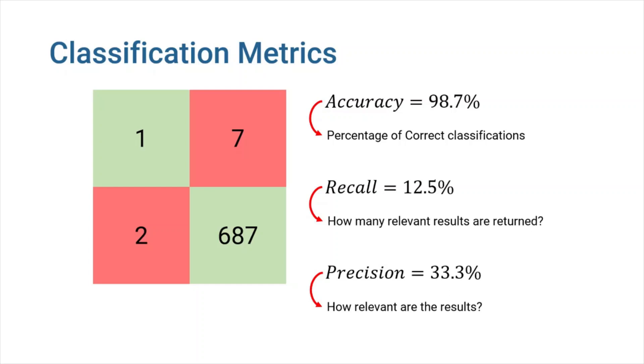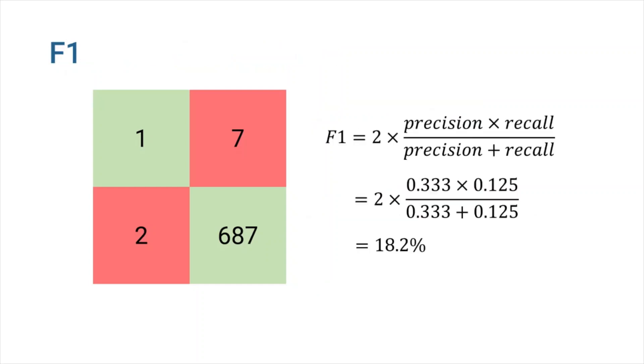There is one last metric that I want to introduce in this video. The final score that we cover in this video is the F1 score. It is actually a harmonic mean of recall and precision. We can use this metric when we don't have a preference between better recall and better precision and want our model to perform generally well on both metrics. For our dumb classifier with precision of 33% and recall of 12%, the F1 score is 18.2%.